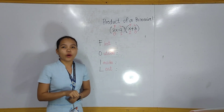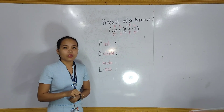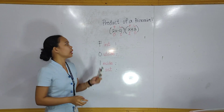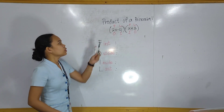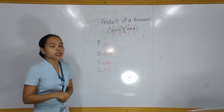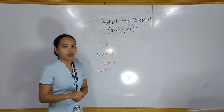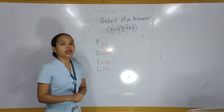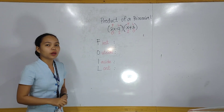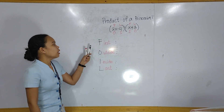The first way is the FOIL method. For example, you are given 2x minus 4 times x plus 3. So we will use the FOIL method. What is the FOIL method?